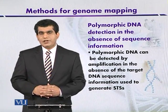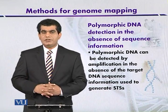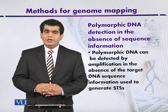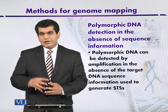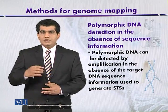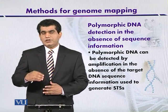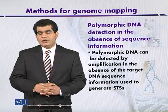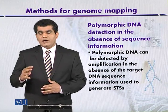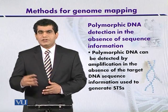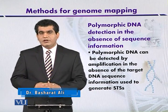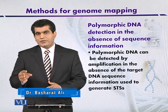Polymorphic DNA can be detected in the absence of sequence information, and even then we can map the DNA. For example, we can use the technique called PCR in order to amplify particular genomic DNA. In the first instance we cannot use STS sequences, which are sequence tagged sites — they are mainly used to map the DNA.